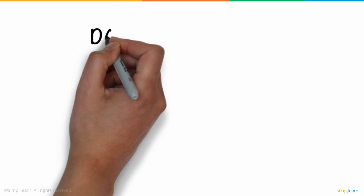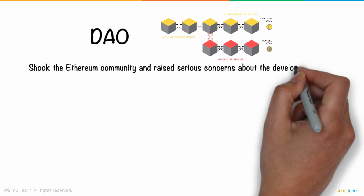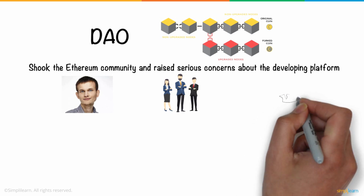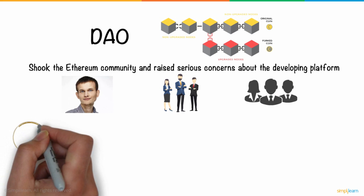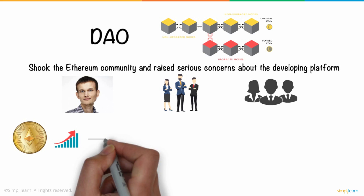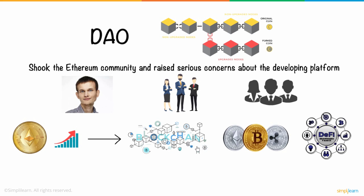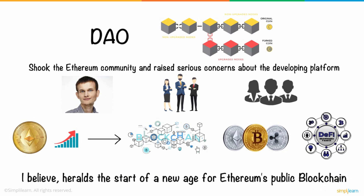The DAO breach and related Ethereum hard fork shook the Ethereum community and raised serious concerns about the developing platform. In hindsight, Vitalik Buterin, Ethereum developers, and the global community made decisions that ensured the Ethereum blockchain's survival in its early days. Since the DAO attack, Ethereum has increased in importance as a foundation of blockchain, cryptocurrency, and decentralized finance. This occurrence heralds the start of a new age for Ethereum's public blockchain.